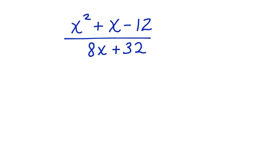Let's look at one more. Here we have x squared plus x minus 12 divided by 8x plus 32. We can factor the numerator into two binomials. And we have x and x.